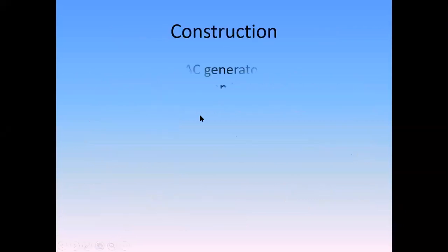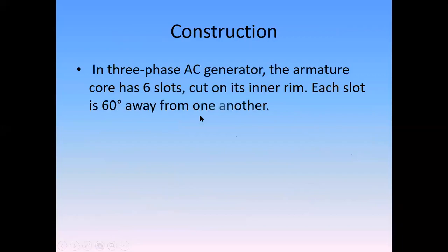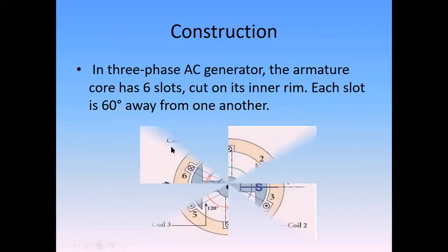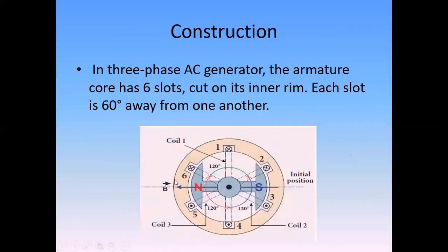Now for the construction of a three-phase generator — three armature coils means it has six slots. This is your stator core. In the inner core of the stator, you can see six slots: one, two, three, four, five, six.